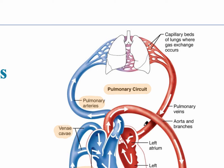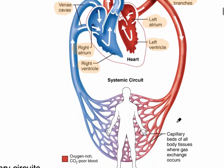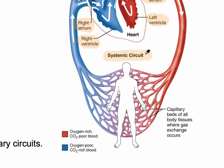Now we have freshly oxygenated, scarlet red blood. That blood returns to the left side of the heart through the pulmonary veins into the left atrium, then into the left ventricle. The left ventricle's job is discharging or ejection of blood, so blood exits the left ventricle through the aorta and its various branches to the systemic circuit.